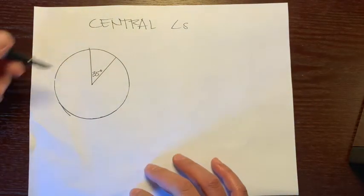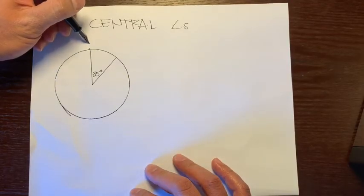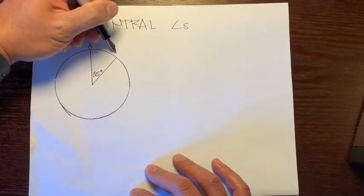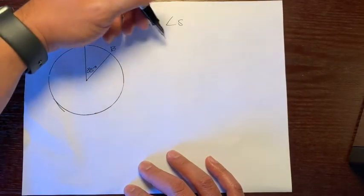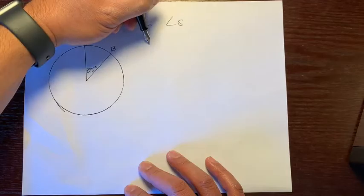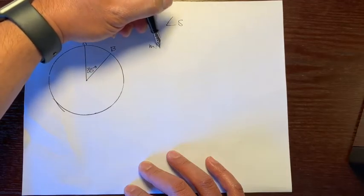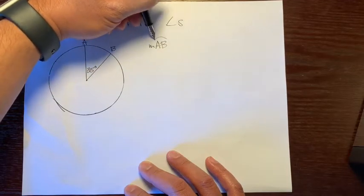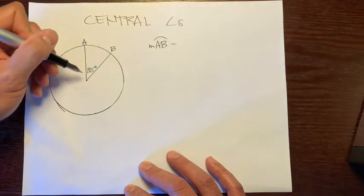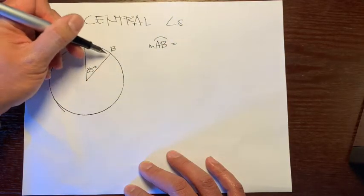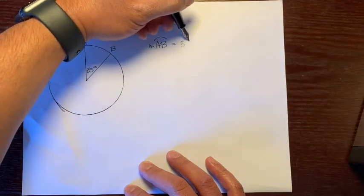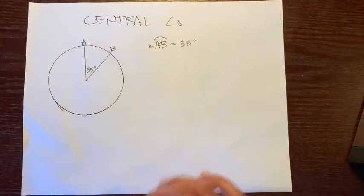For example, if I labeled this point right here point A, and this point here point B, and a question in class asks what is the measure of arc AB, since the central angle is 35 degrees, then that arc is also 35 degrees.